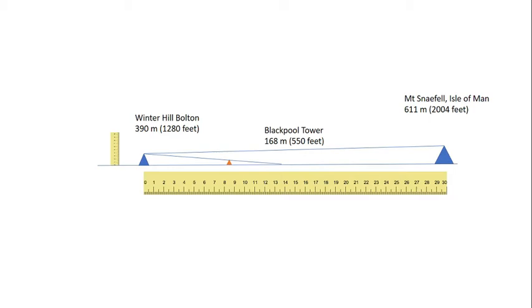We can draw a line to Mount Snaefell. You can see you're looking upwards to see Mount Snaefell. You look downwards to see Blackpool Tower. They don't intersect. And the fact that they do intersect on the image proves that the Earth is not flat.